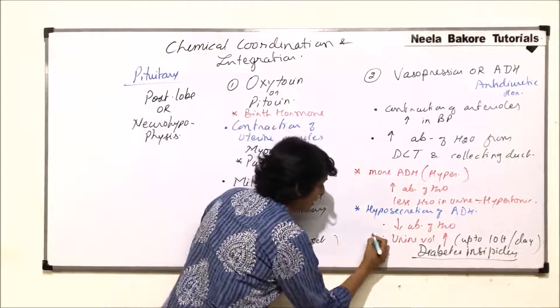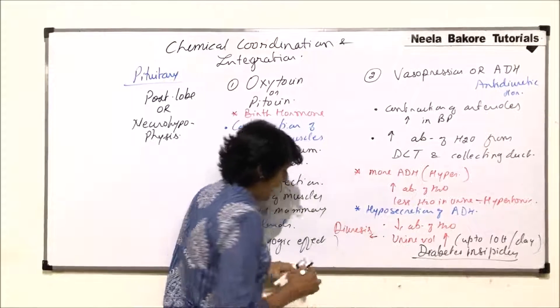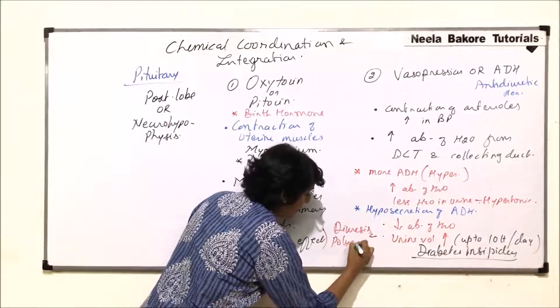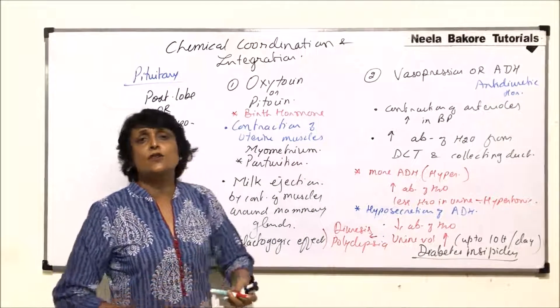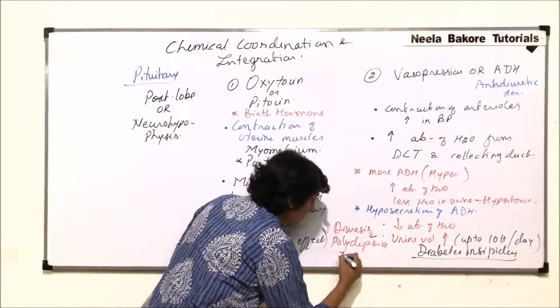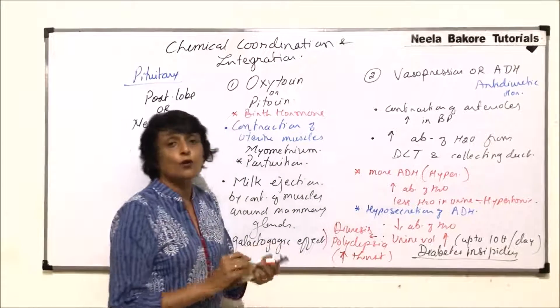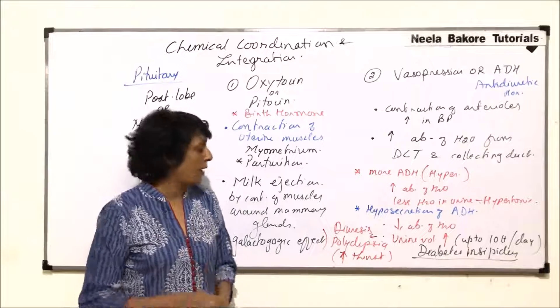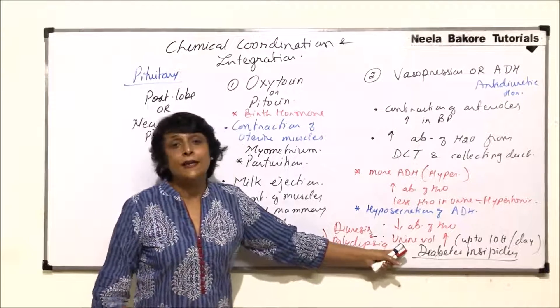The other symptom: this increased volume of urine is known as diuresis. The other condition is it results in polydipsia. Polydipsia is when a person feels extremely thirsty - increase in thirst. The person feels very thirsty because that water is getting eliminated from the body. So there are two symptoms which we normally see whenever there is diabetes insipidus due to less secretion of ADH.